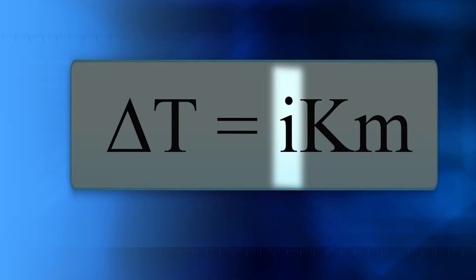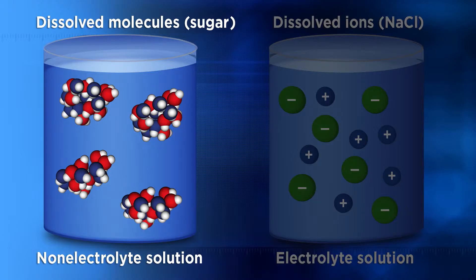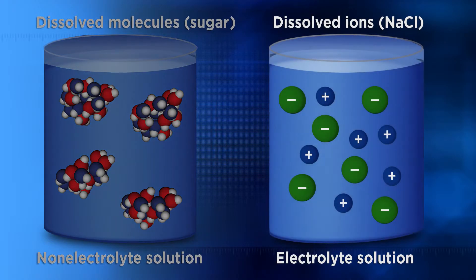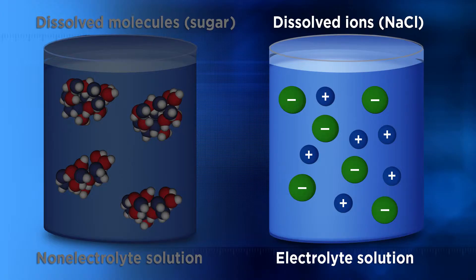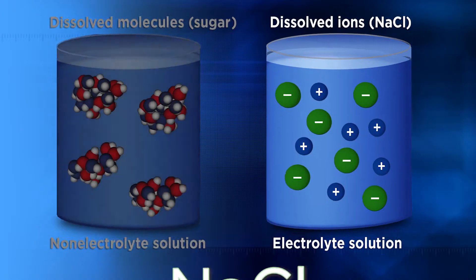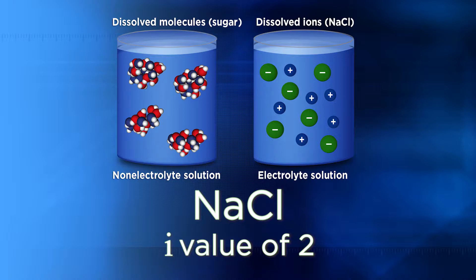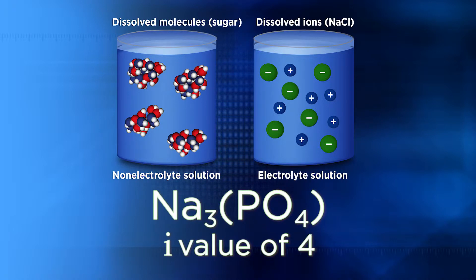Remember the models of sugar and salt dissolving drawn earlier in this unit? Sugar, like other non-electrolyte covalent substances, will remain intact when dissolved and so it will contribute one particle, giving it an i value of 1. If the substance is an electrolyte that will dissociate into ions when dissolved, like NaCl, it has an i value of two for the two ions that formed. A salt like sodium phosphate is made of four ions — three sodiums and one phosphate — and will have an i value of four.